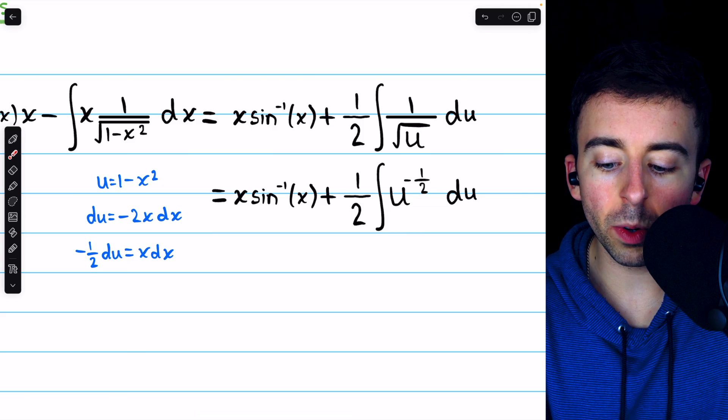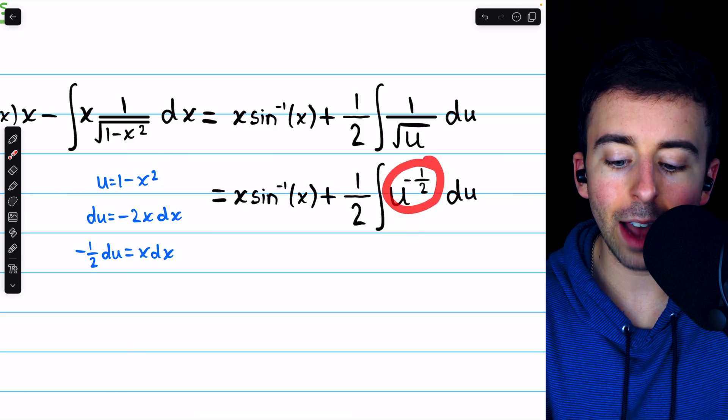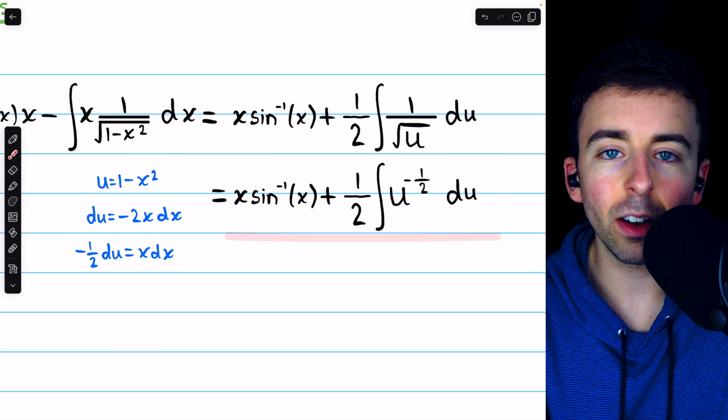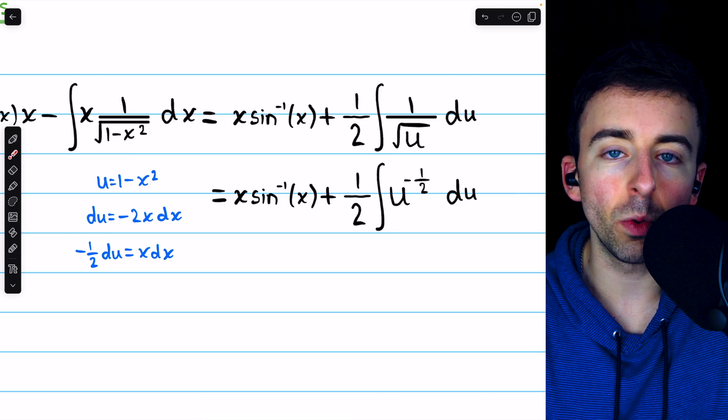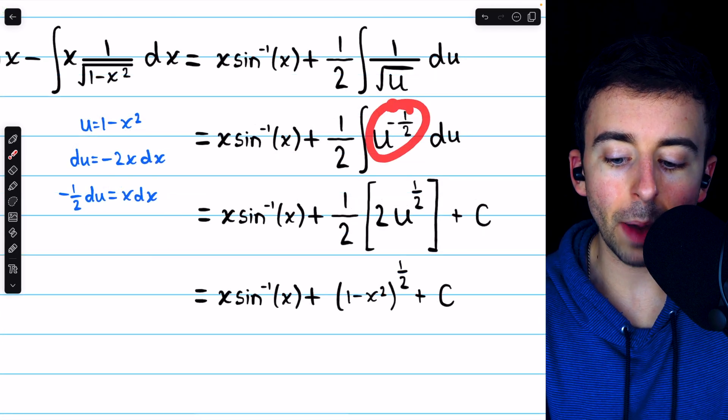Now 1 over the square root of u is the same as u to the negative half, so we'll rewrite it like that, which makes it easy to integrate using the power rule.